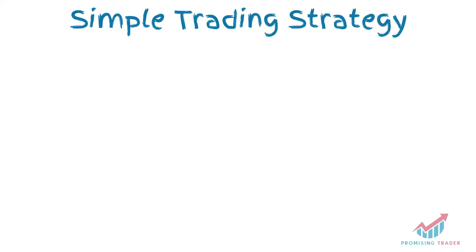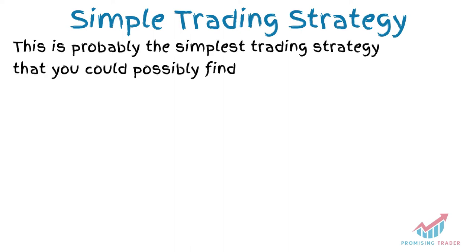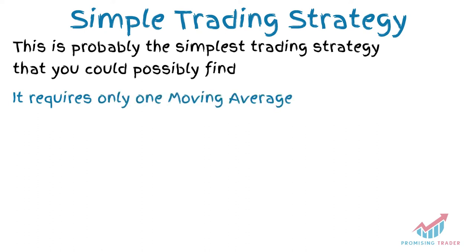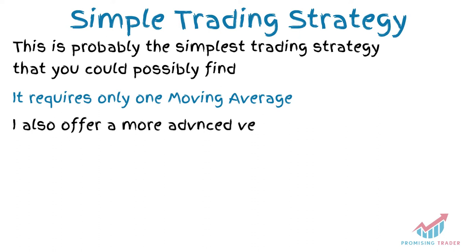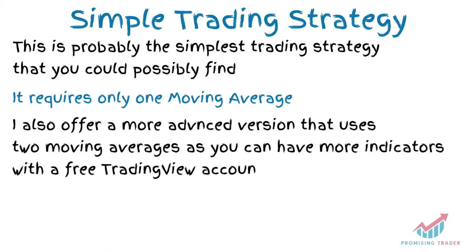Simple trading strategy. Finally, we are at the long-awaited strategy. I believe this is the simplest strategy you can find and it requires only one single moving average, which makes it perfect if you have a free account on TradingView. However, because with a free TradingView account you can have up to four indicators — one being the volume and one my candle scanner — I would recommend using two moving averages, specifically the 233 or 200 EMA and the 55 or 50 EMA, because two moving averages will give you a better idea of the general trend.